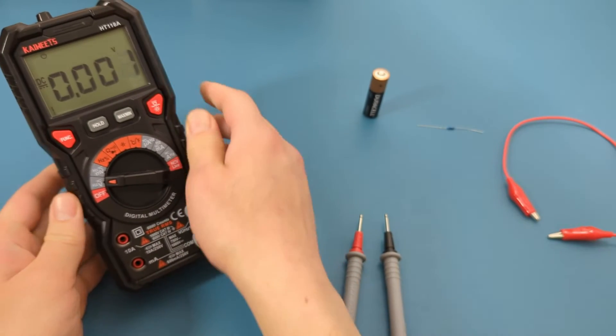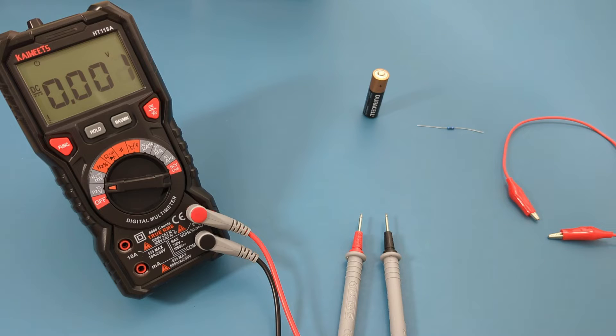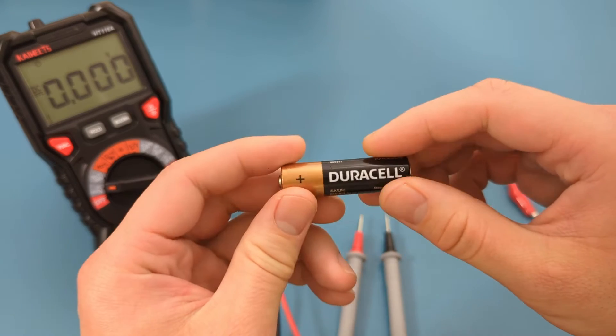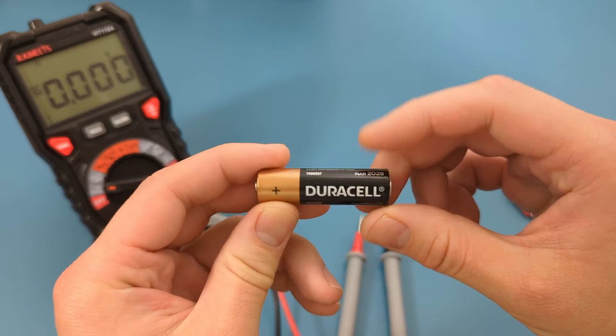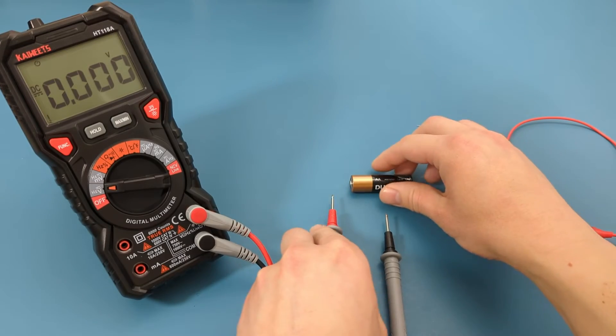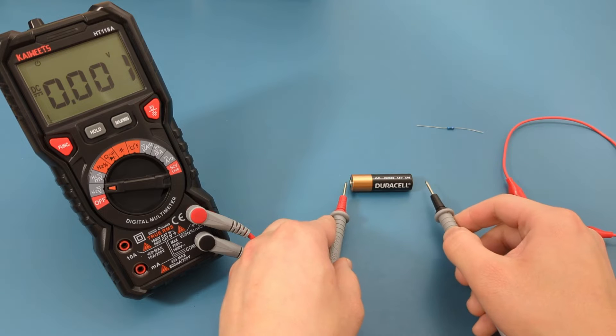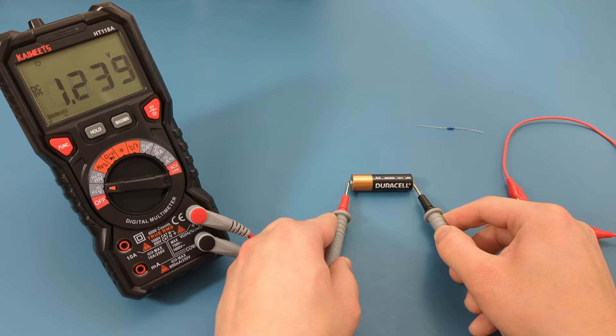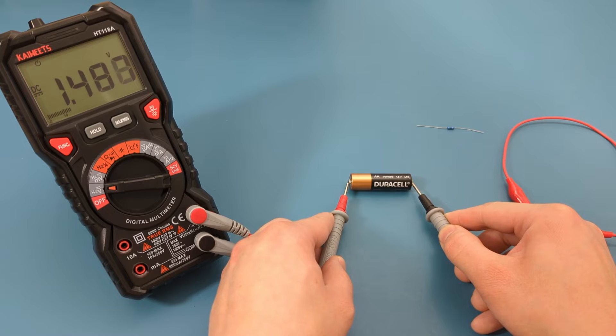The first test is to check the voltage of this AA battery. Turn the dial to the voltage setting. We're getting a reading of around 1.5 volts.